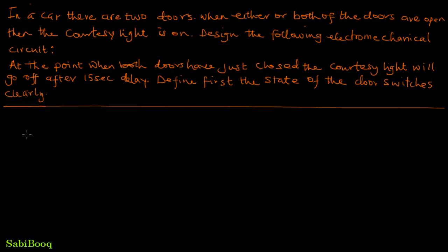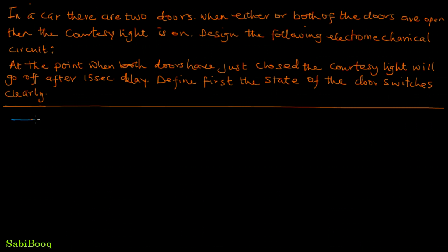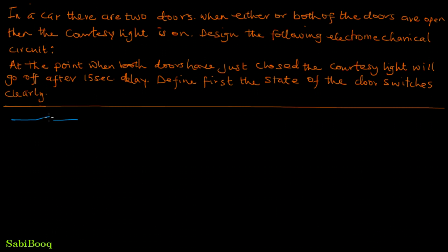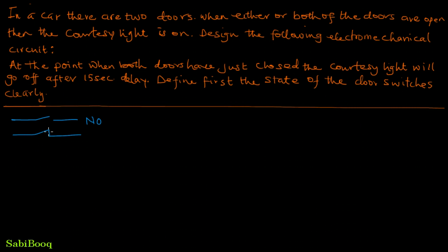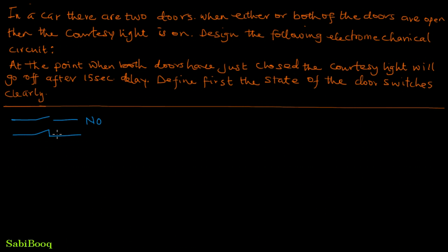First, we will talk about normally open and normally closed switches. A normally open switch looks like this — there is a gap between two points, meaning the switch is open. We call this NO, normally open. A normally closed switch looks like this — that gap has been closed or bridged by a line, showing the switch is closed. This is the schematic way to represent normally open and normally closed switches.